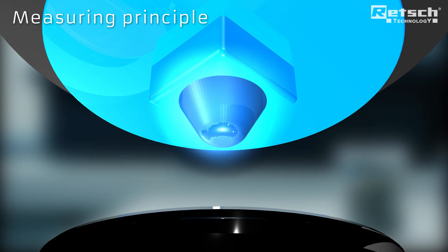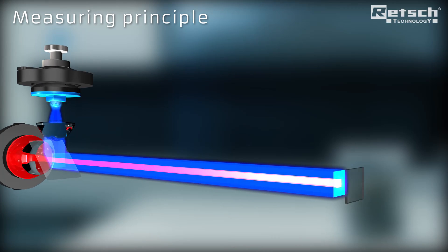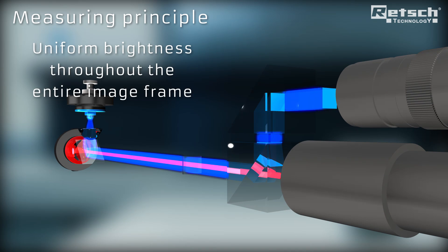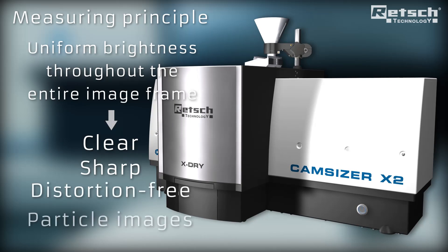The monochromatic light of two pulsed LEDs is collimated and focused to illuminate the detection area of each camera. This guarantees uniform brightness throughout the entire image frame, resulting in clear, sharp and distortion-free particle images.